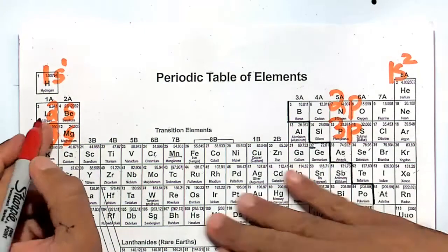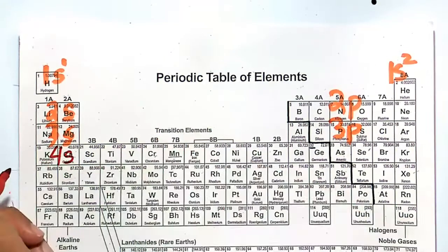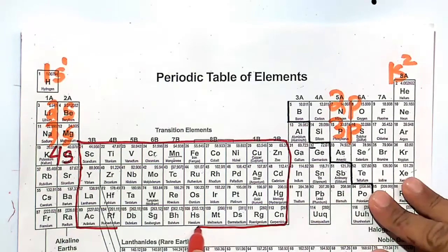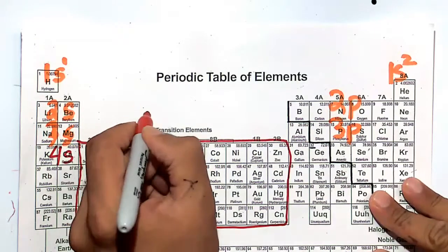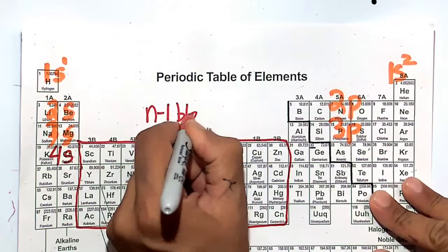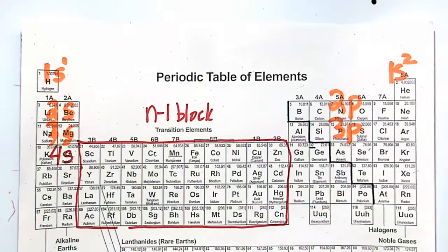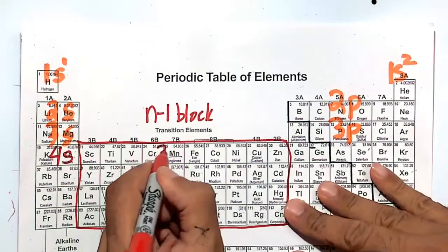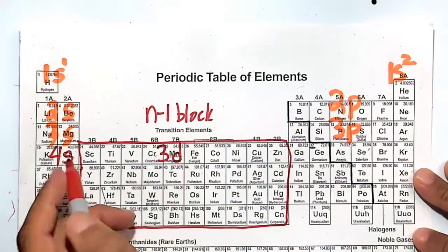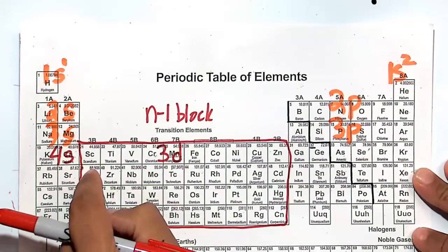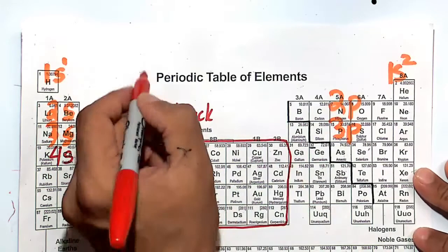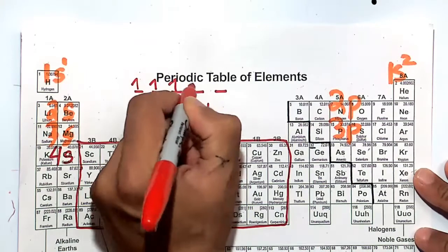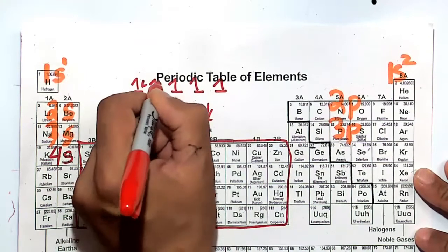After 3p, we go to the 4s orbital. Now, the transition metals, this big rectangular block here, these are called the d-block. But some textbooks accurately call it the n-1 block. The n-1 block means after 4s, the electrons will start to go to the 3d orbital. So the 3d begins with scandium. And then after zinc, we fill out all 10 electrons. Remember how the electrons go in a d-orbital, spin up and spin down.